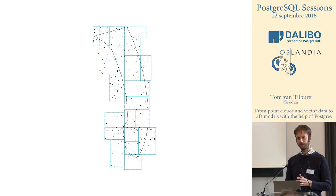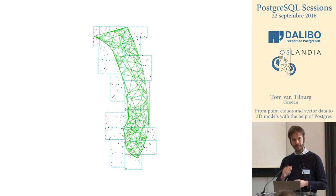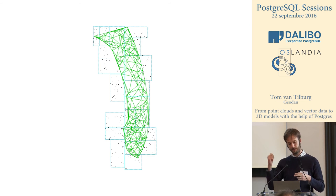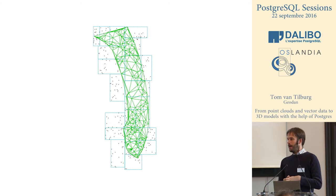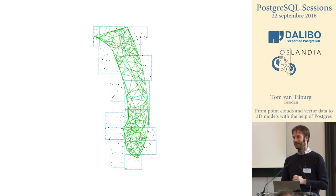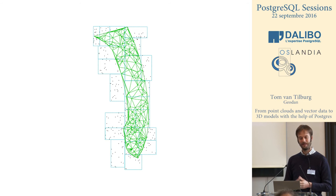For every vertex in the polygon, we do a nearest-neighbor search on the point cloud data. Once you have that, you combine your point cloud points and your vertices and lines into a triangulation function — and this is the result: a nicely triangulated polygon. Then rinse and repeat: you do this process for every polygon you have in your database. We were really afraid that would be undoable, but the result is not that bad.